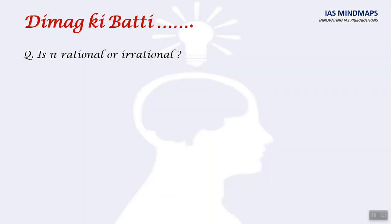Next is this Dima ki Bhatti. So, my question is, is pi, that is 22 by 7, is rational or irrational? Please think and answer in comment box.